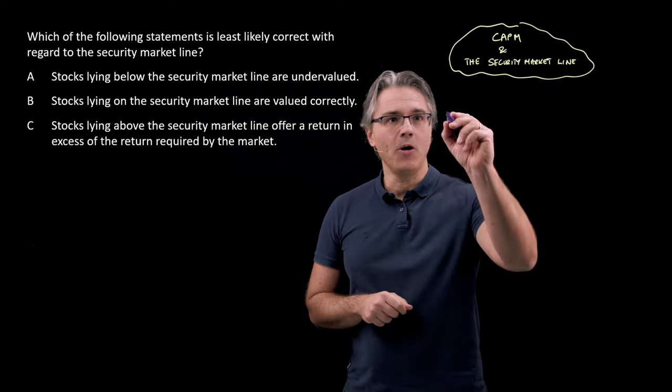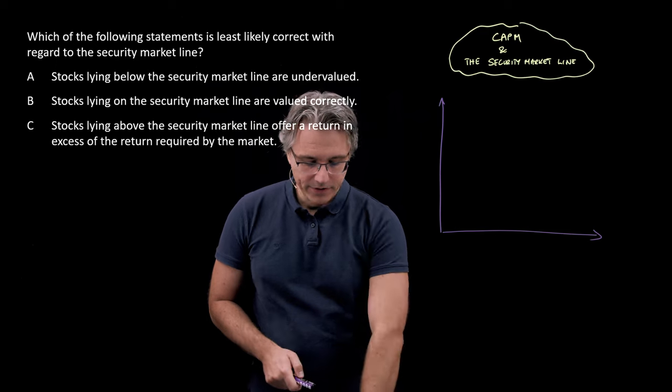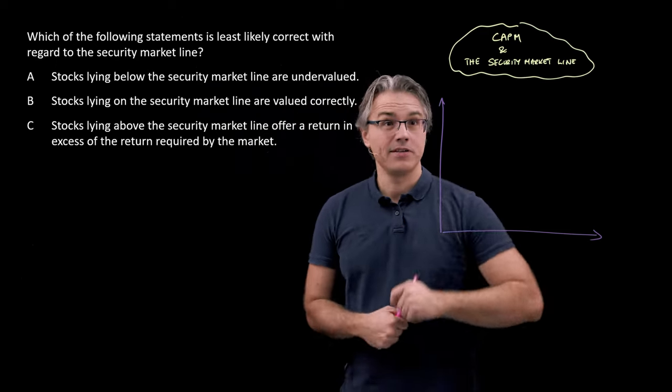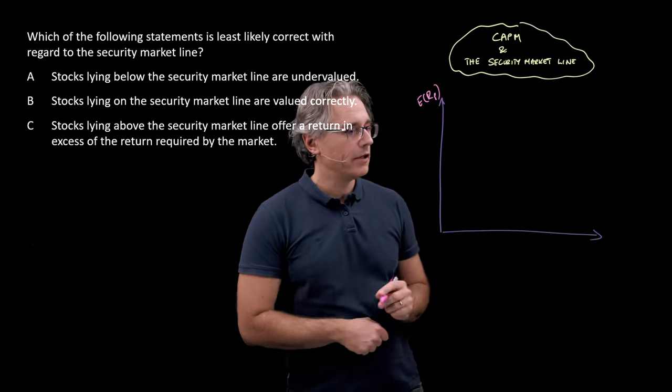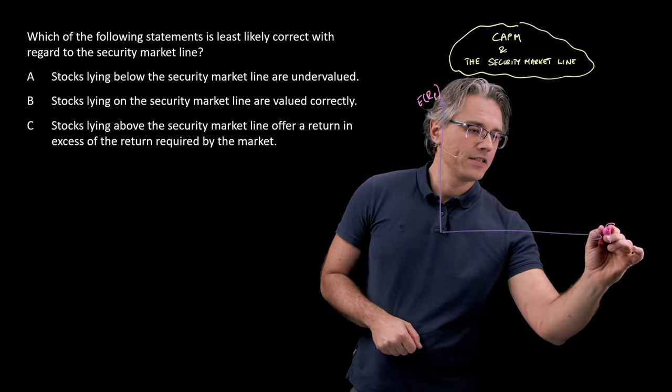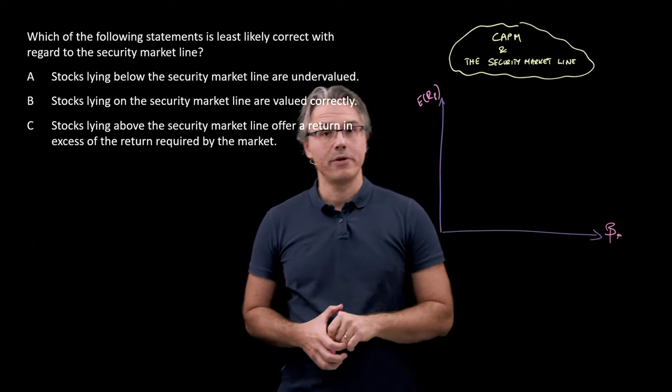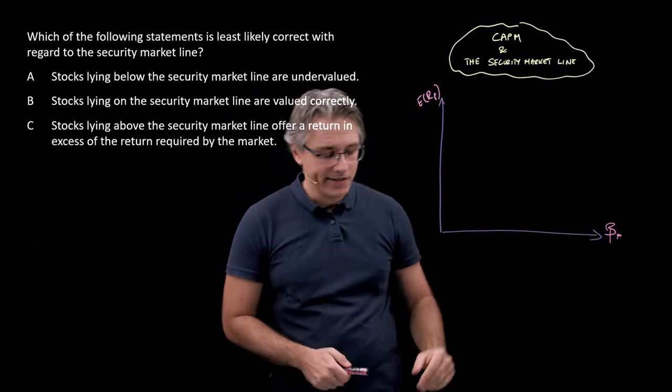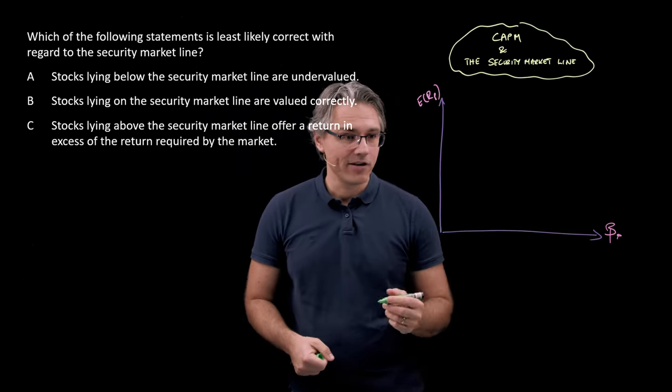So let me depict this graphically. Obviously I'm going to draw a chart where on the vertical axis I'm going to have the expected return on a stock or on a portfolio. And over here, beta, which is a measure of the risk which that portfolio exposes us to. Obviously just the systematic risk component of it, the market risk.